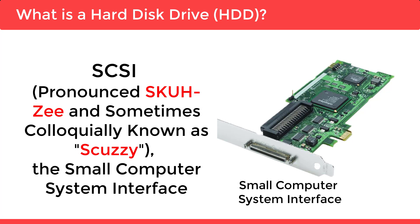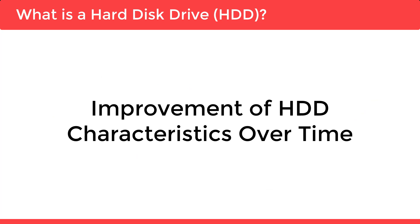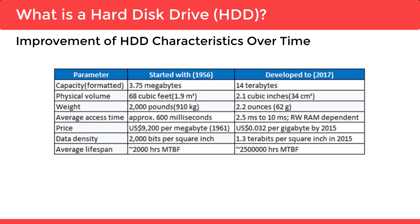Let's look into the improvements of HDD characteristics over time, from how they started in 1956 through to 2017. In terms of capacity when formatted, it started at 3.75 MB and has grown to 14 TB.